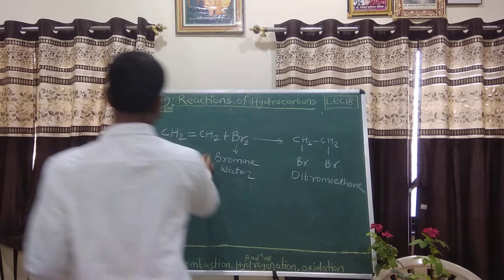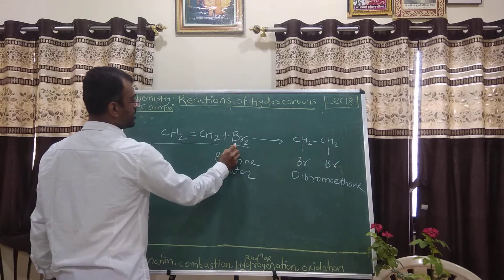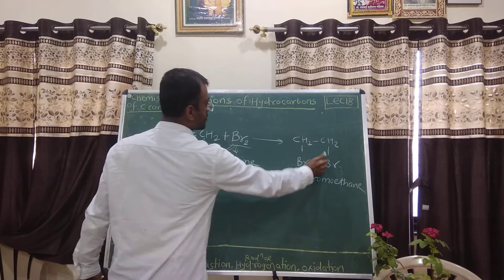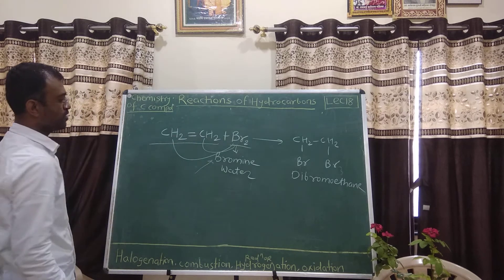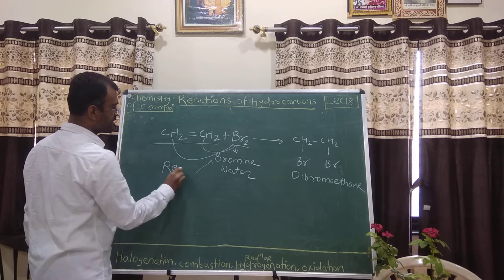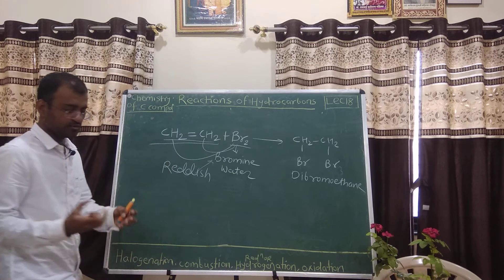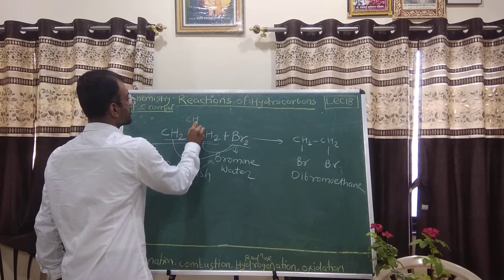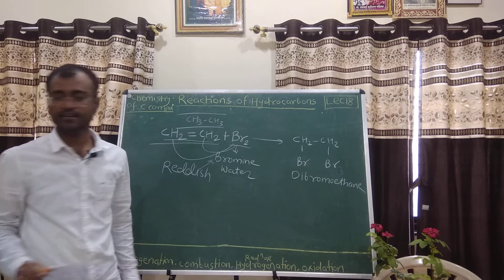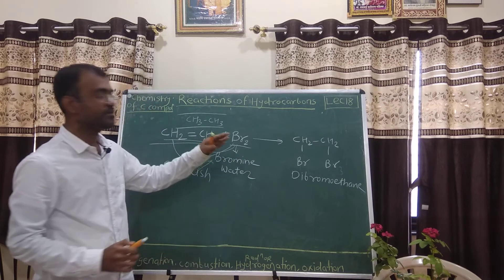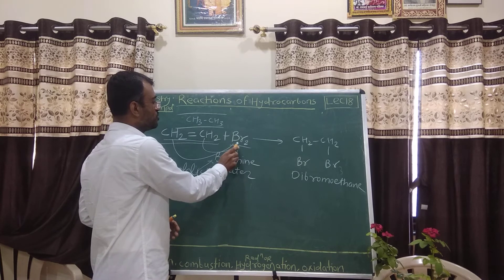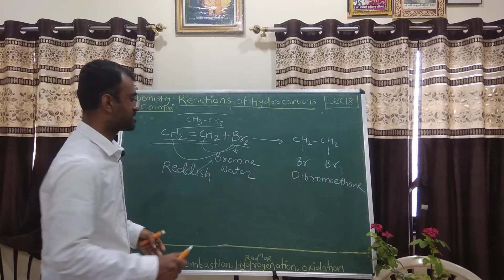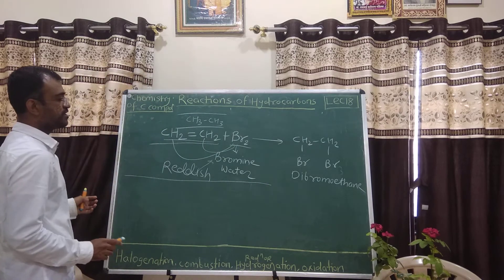So friends, when bromine reacts with an unsaturated compound — two carbon atoms with a double bond — this is the distinguishing test for unsaturated hydrocarbons. Because bromine is a reddish liquid, when it reacts with unsaturated hydrocarbons, the colour will disappear. Whereas alkanes won't show this reaction — bromine undergoes substitution with alkanes, not addition. Hence if we use bromine as a distinguishing material with unsaturated compounds it decolorizes, whereas with saturated compounds it shows no reaction. This is how bromine can be used to distinguish unsaturated hydrocarbons.